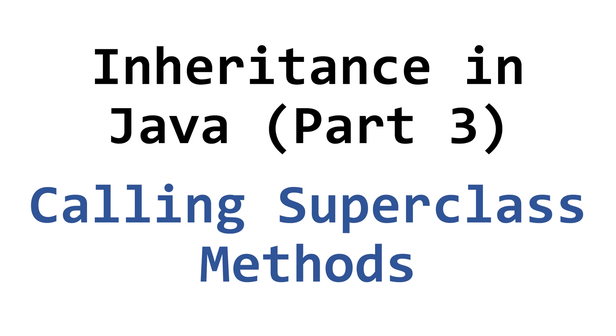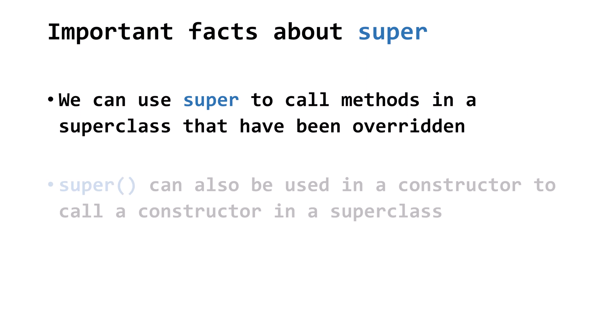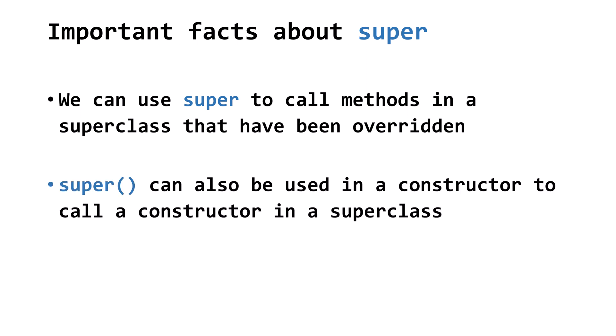Next, we're going to talk about using the super keyword to call methods in a super class. Some important facts about using the super keyword: we can use it to call methods in a super class that have been overridden in the subclass. Super can also be used in a constructor to call a constructor in the super class, but we won't learn about that second use right now.